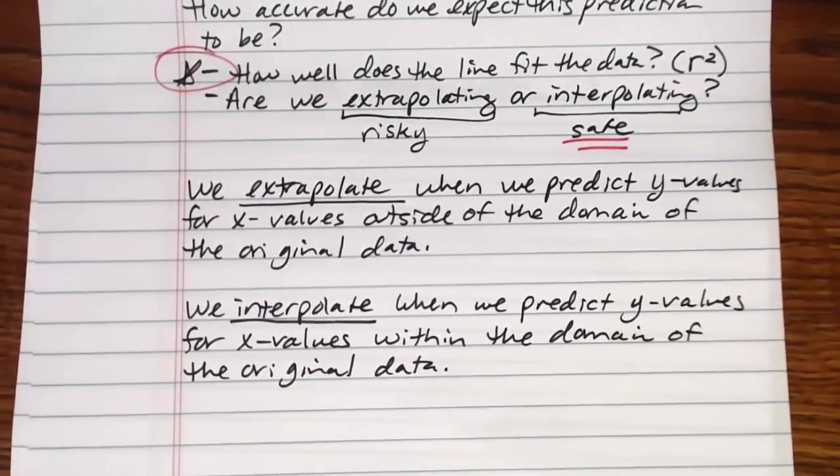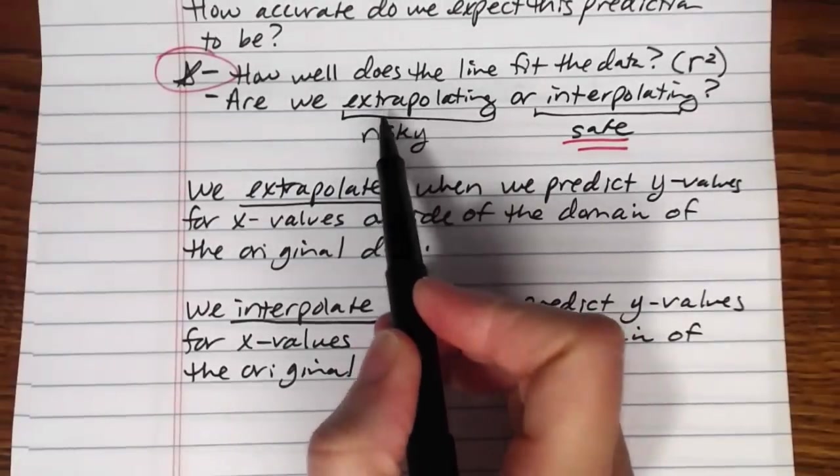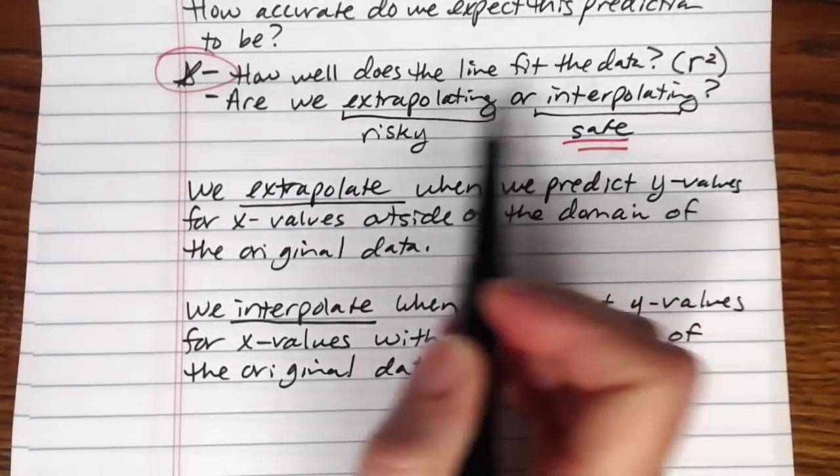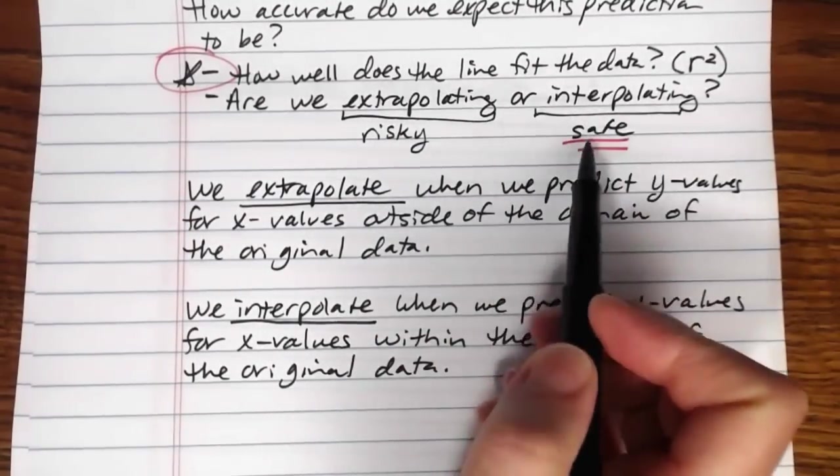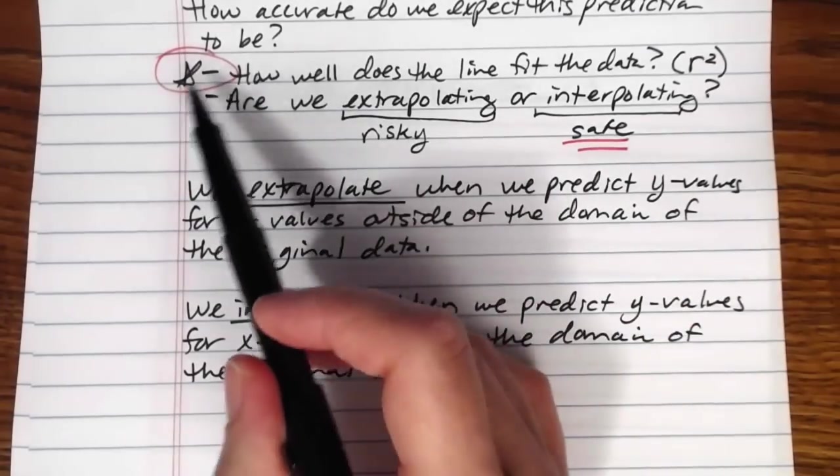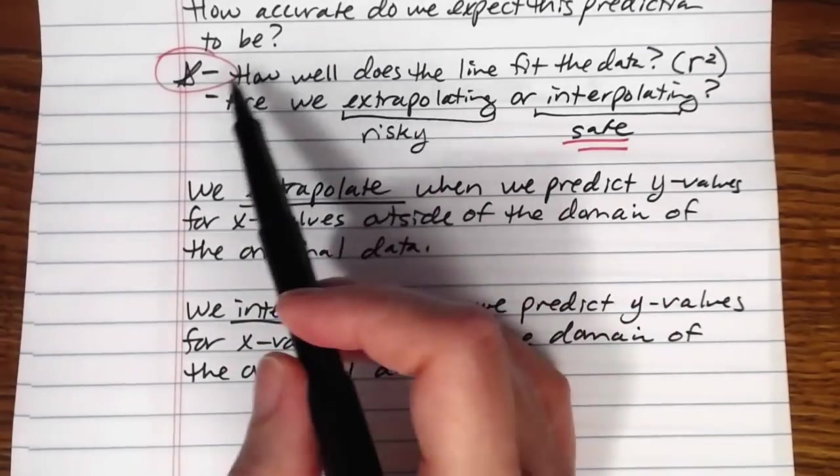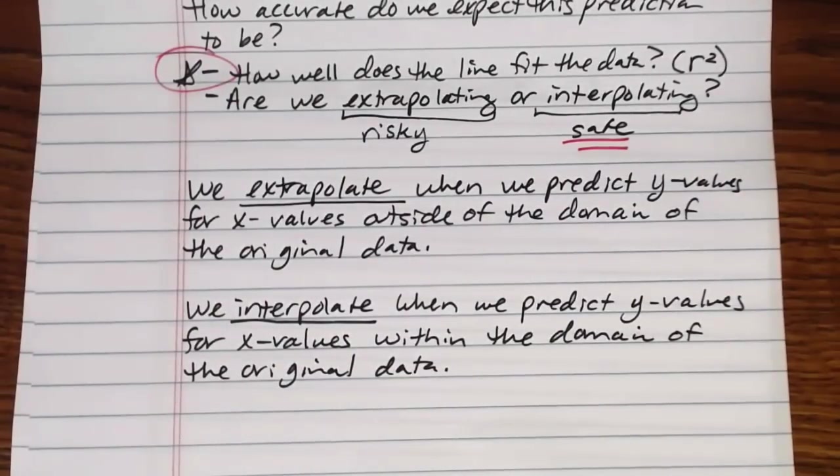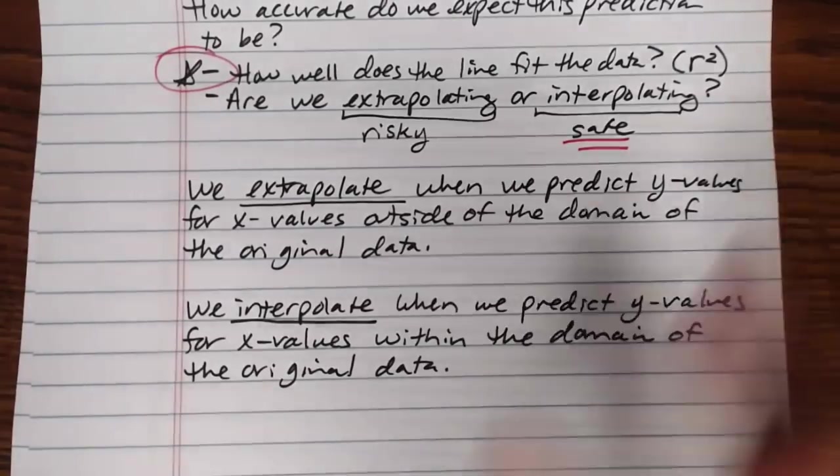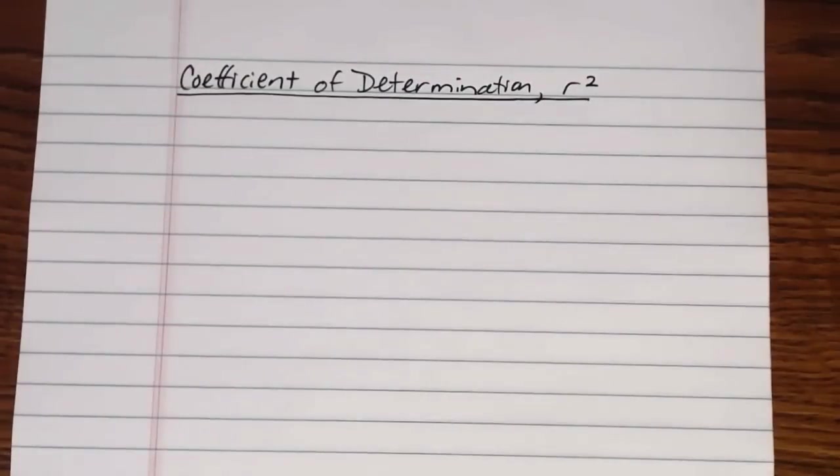And then we might want to know how accurate we expect the prediction to be. In the last video we talked about the difference between extrapolating and interpolating. But regardless of which one you're doing, even if you're interpolating, which is a safe thing to do, also the accuracy of your prediction hinges on how well the line fits the data. If the line does not fit the data well, then you can make all the predictions that you want based on that line. But you shouldn't expect them to be very accurate if it's not a good fitting line.